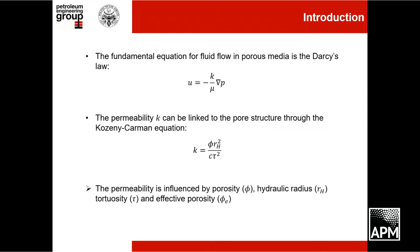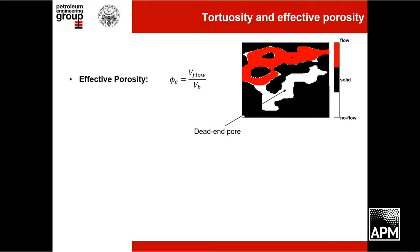The Kozeny-Carman equation is a function of the porosity, the hydraulic radius rH, and the tortuosity tau. Another fundamental parameter is called effective porosity, and we'll see later how to use it to modify the Kozeny-Carman equation. Effective porosity is defined as the volume of the pore space interested by the fluid flow divided by the total volume.